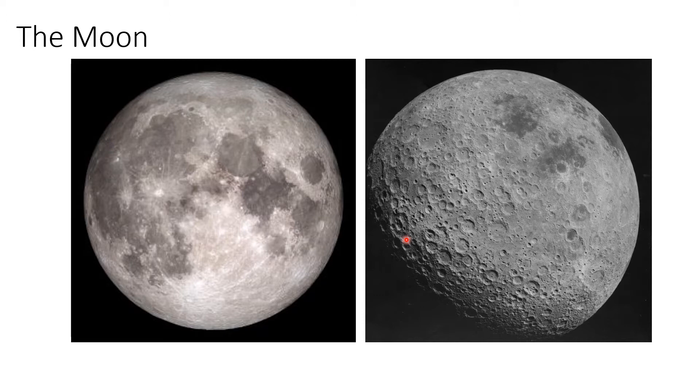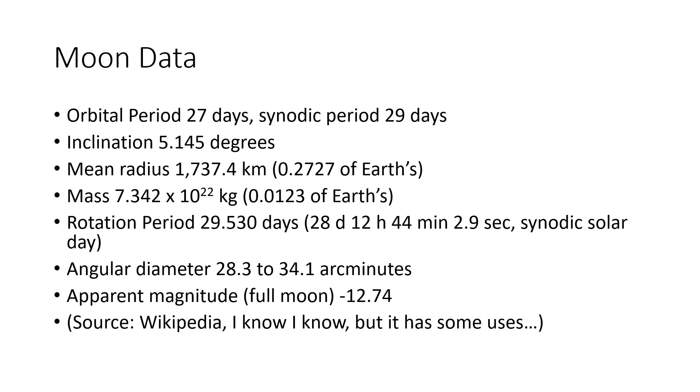For my master's degree, one of the things we had to do was estimate the amount of cratering that was on a specific area of the moon. We had a picture of the moon, we had to measure the little craters that we could see in millimeters with a ruler, and then we had to categorize how many we saw. It was a pretty interesting project. So here's the moon, we've got lots of data on the moon that we'll talk about in just a second.